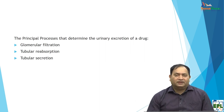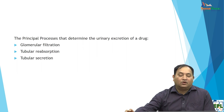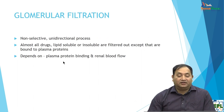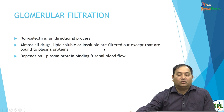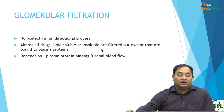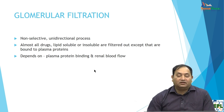When a drug is excreted through the kidney, urinary excretion can be divided into three parts: glomerular filtration, tubular reabsorption, and tubular secretion. Glomerular filtration is a non-selective, unidirectional process. Almost all drugs — lipid soluble and insoluble — are filtered except those bound to plasma proteins, which cannot be filtered. Key factors affecting glomerular filtration are plasma protein binding and renal blood flow.